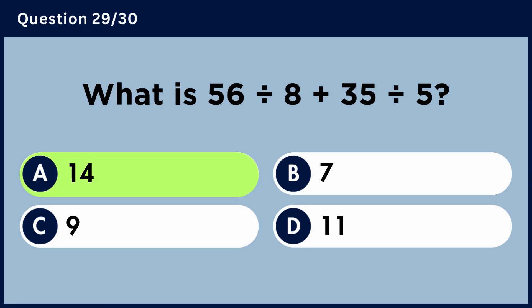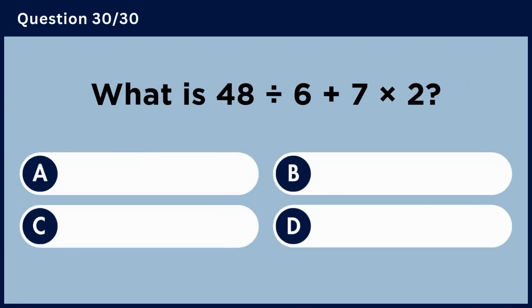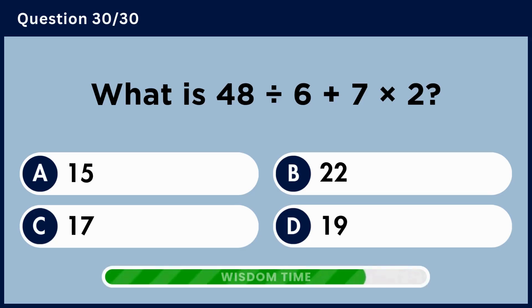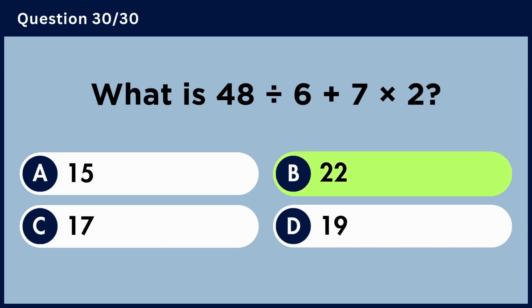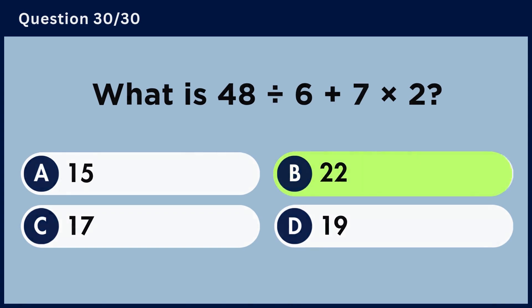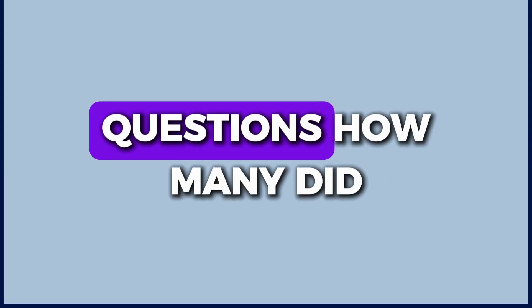What is 48 divided by 6 plus 7 multiplied by 2? Answer A, 14. Answer B, 22.